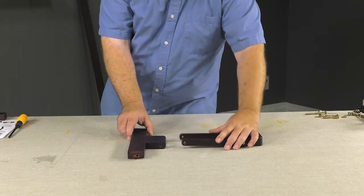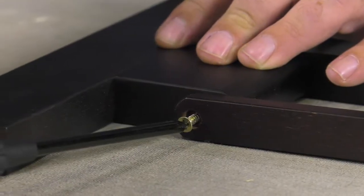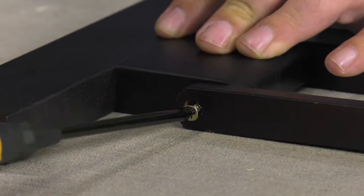Attach the top easel support bar, O, to the center mast support bar, K, using the 3.25-inch wood screws, B.